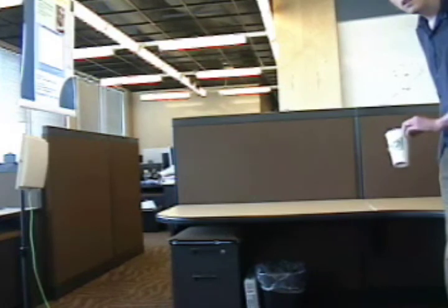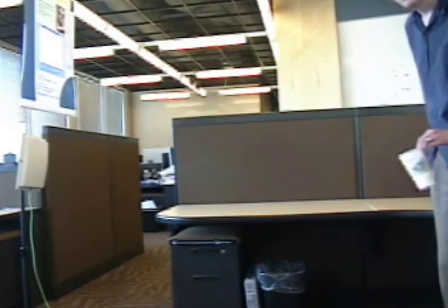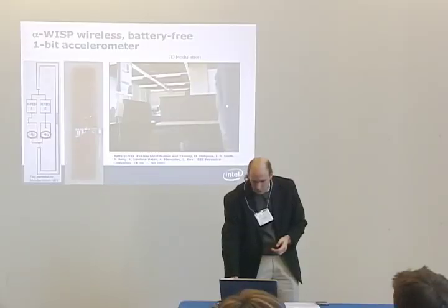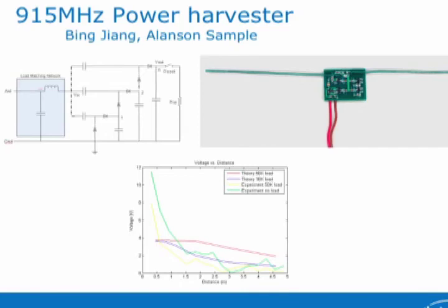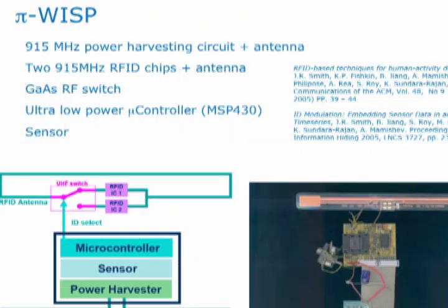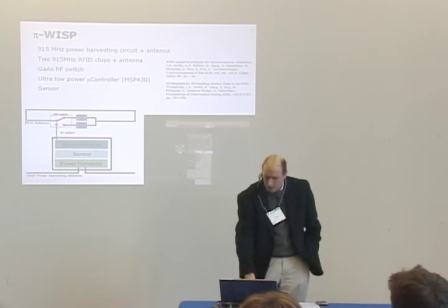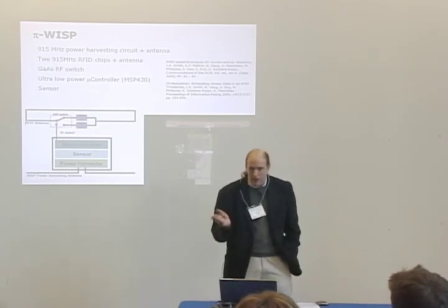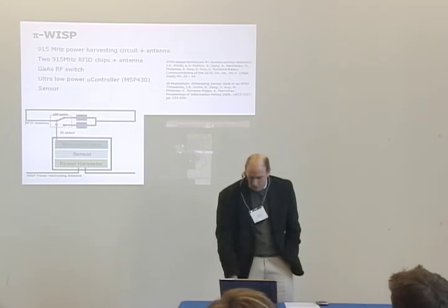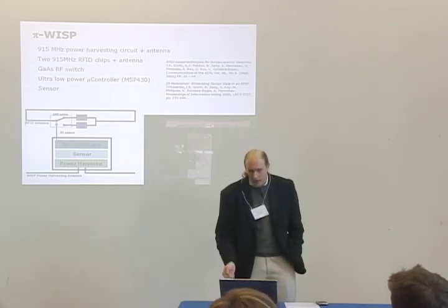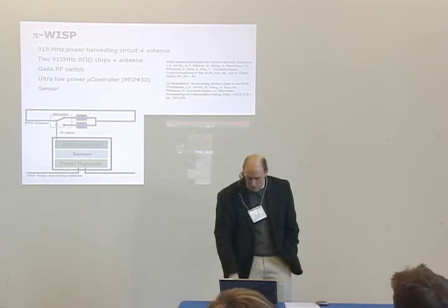The idea of overloading the ID is something kept throughout the WISP project. We later designed a power harvester, leading to a more complex creation with a microcontroller, power harvester, two commercial tags on one antenna, a separate power harvesting antenna, and a gallium arsenide switch to select one chip or the other. It turns out you can make something crude that does the basic things you'd want a WISP to do this way.